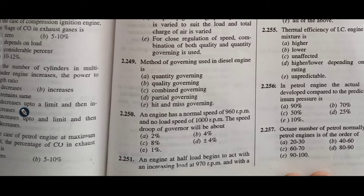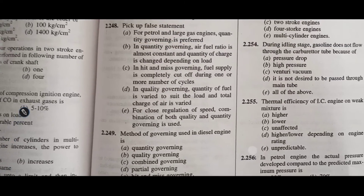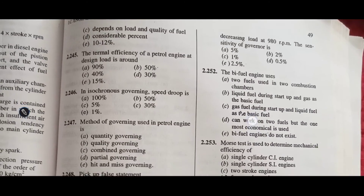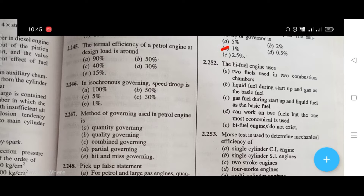An engine at half load begins to act with an increasing load at 970 rpm and with a decreasing load at 980 rpm. You have to find out what is the sensitivity of the governor. The right answer is C, that is 1%.